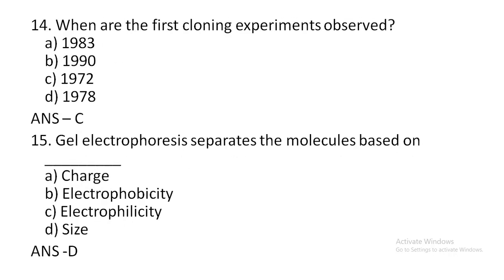When were the first cloning experiments observed? Option A: 1993. Option B: 1990. Option C: 1972. Option D: 1978. The correct answer is 1972.